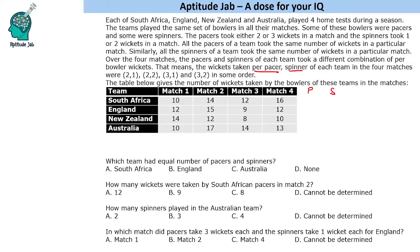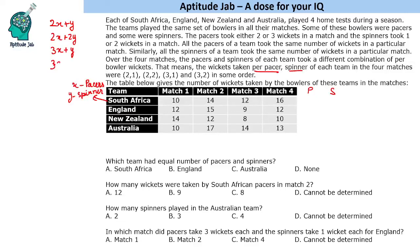To solve this, let us say for South Africa there are x pacers and y spinners. The four combinations of total wickets will be: 2x + y (two wickets per pacer, one per spinner), 2x + 2y, 3x + y, and 3x + 2y. Since x and y are positive numbers, 2x + y will be the least value and 3x + 2y will be the highest value.